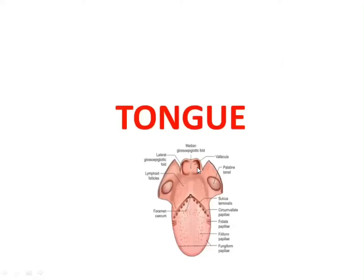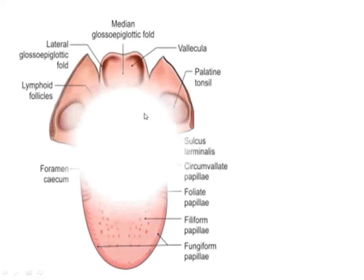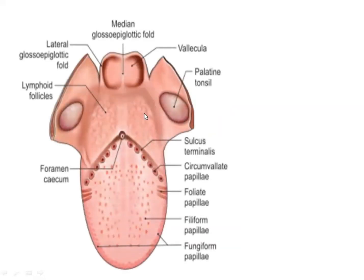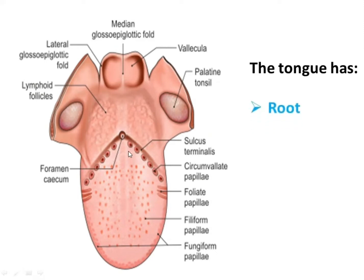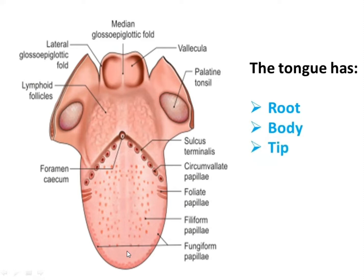Today we will see the anatomy of the tongue. First we will see the parts of the tongue: the root, then the body, then the tip. Then we will see what are the important papillae in the tongue.